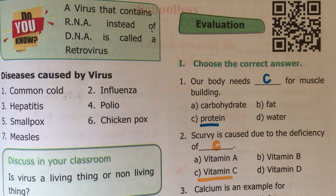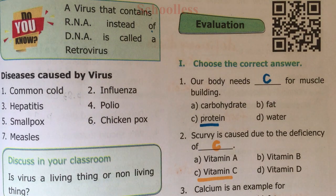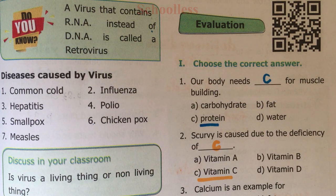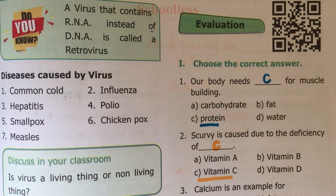First section: Choose the correct answer. Question Number One: Our body needs blank for muscle building. The choices are A) Carbohydrate, B) Fat, C) Protein, and D) Water. Protein is the muscle-building nutrient.